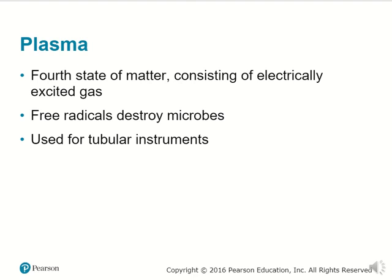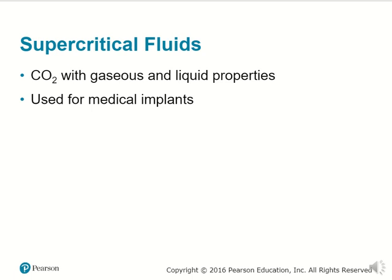Plasma — the fourth state of matter beyond solid, liquid, and gas — is essentially ionized gas. It involves many free radicals that are very effective at destroying microbes and can be used for tubular instruments to clean the insides and outsides of those tubes. Since it is an ionized gas, it can flow through things. Supercritical fluids, one example being carbon dioxide with both gaseous and liquid properties, can also be used for cleaning medical implants.